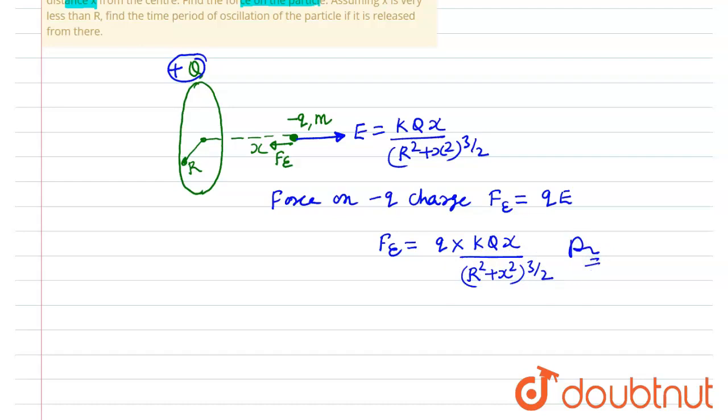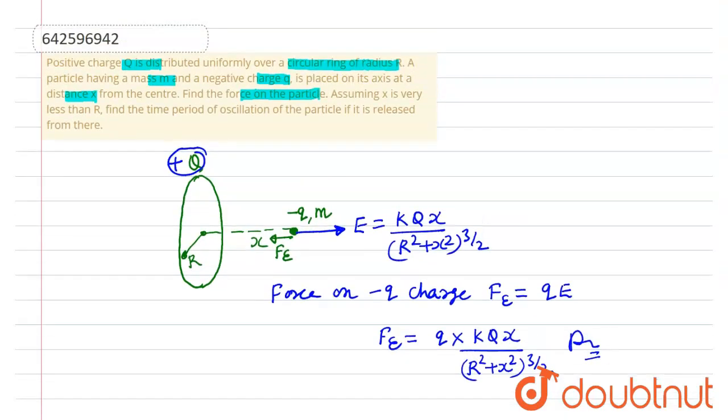In the second part, we are given that assuming x is very less than R, find the time period of oscillation if it is released from there.